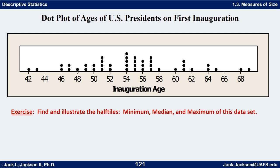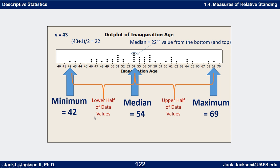To find the median, we count all the dots on the plot. Counting them up gives us 43 data points, so n is 43 — an odd number. Forty-three plus one is 44 divided by 2 is 22, so the 22nd value from the bottom — which should also be the 22nd from the top — is the median.